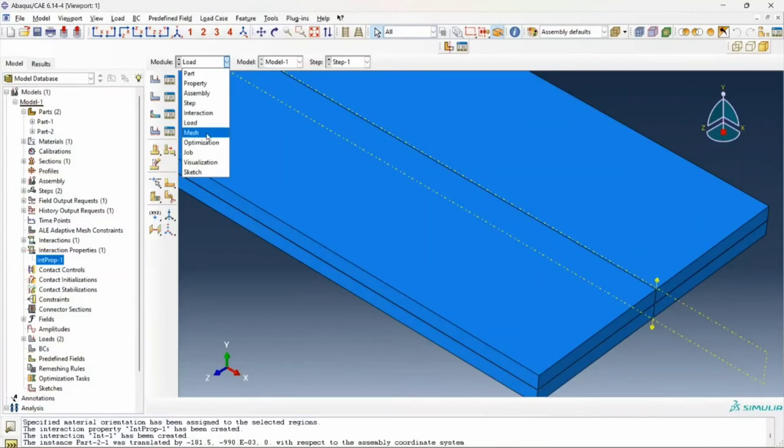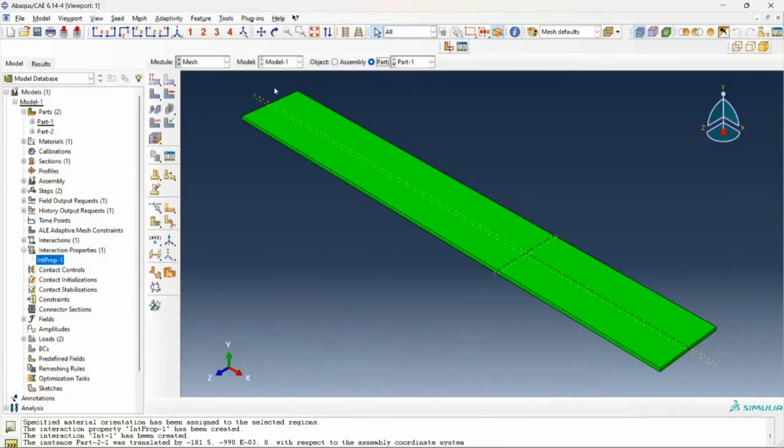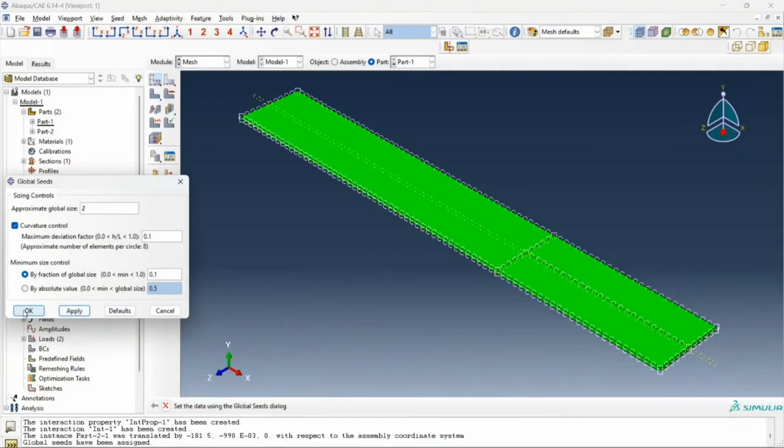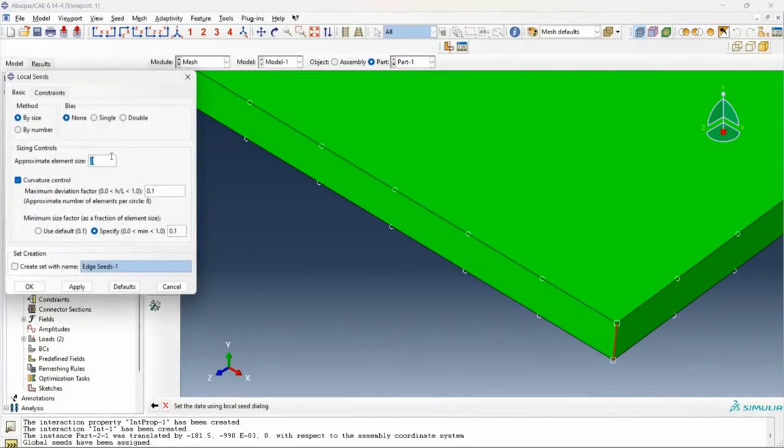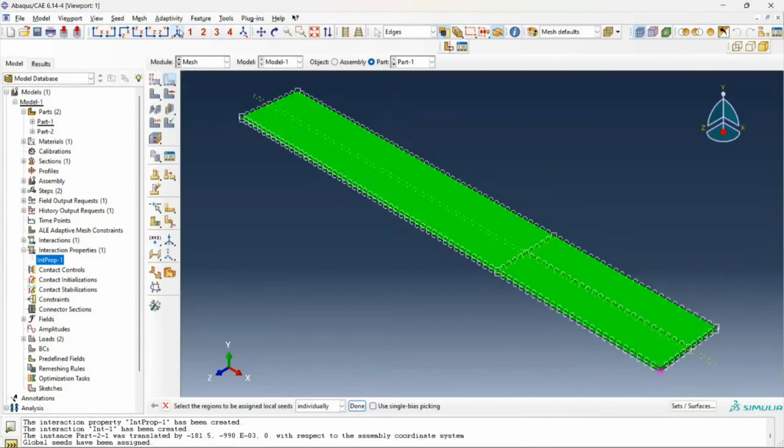Our last step now is simply to mesh our parts. We mesh our parts individually. I go to part one, choose an approximate global size. Now to prevent locking issues, I can also choose an edge length along the width of my half cantilever. Since the width is 0.99, maybe I want three elements along the width, and I say 0.33 is my element size. Apply and click OK. And I mesh my part.